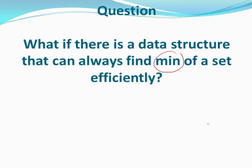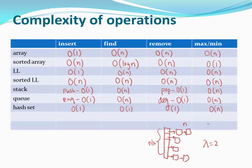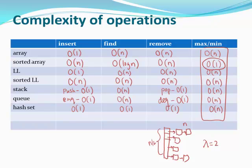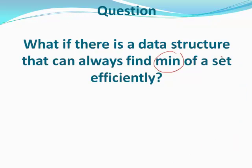This brings us back to the original question: what if there's a data structure that can always find the min of a set efficiently? Looking at everything we've discussed, the only way to find min efficiently is to have a sorted array — but that's a heavy requirement, costing O(n log n) to maintain. So what if you can keep something only partially ordered? Let's think about that, after we discuss why we study such data structures.